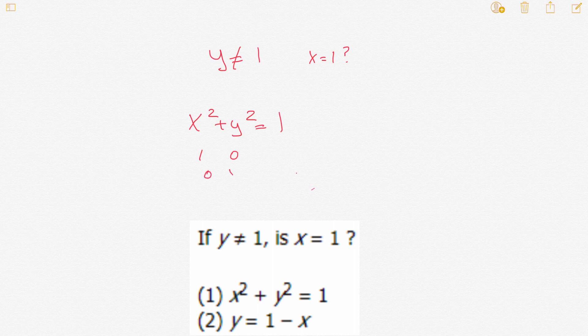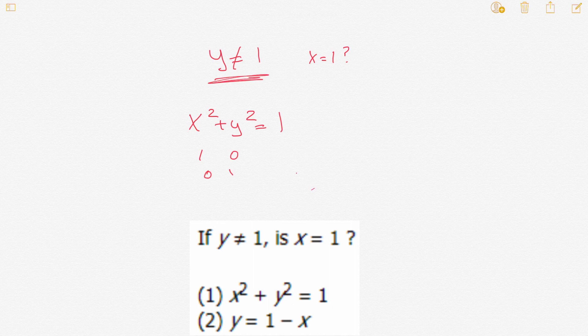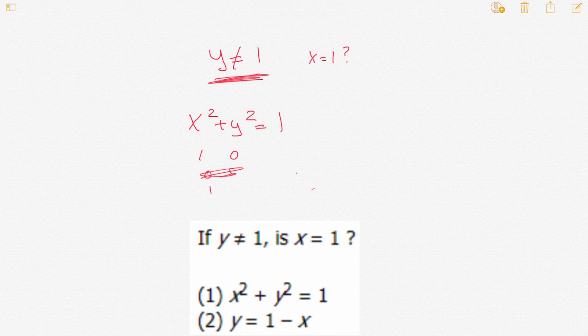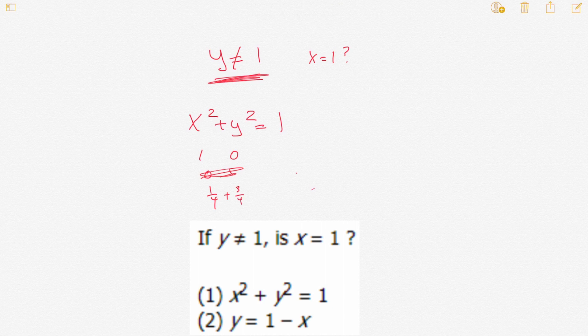x squared could be 0, y squared could be 1. If y could equal 1, but here they can't, so we could scratch that. But x squared could equal a fourth, for example, and y squared could equal three-fourths, right? Because it doesn't have to be integers, because it doesn't say they have to be integers.